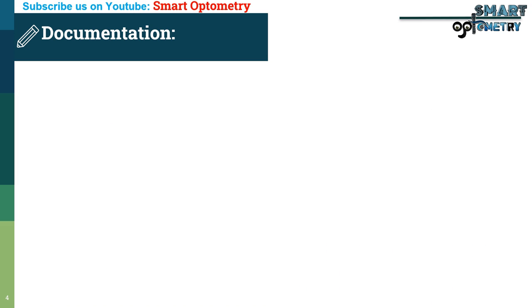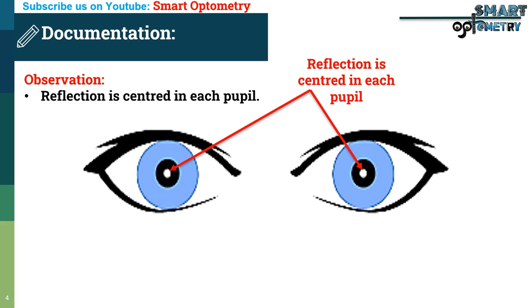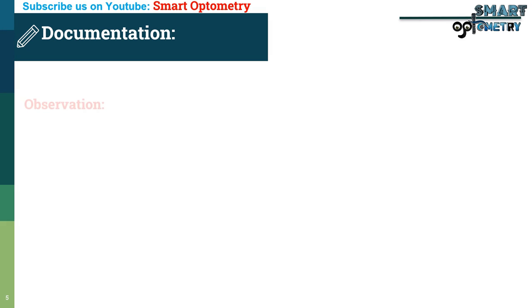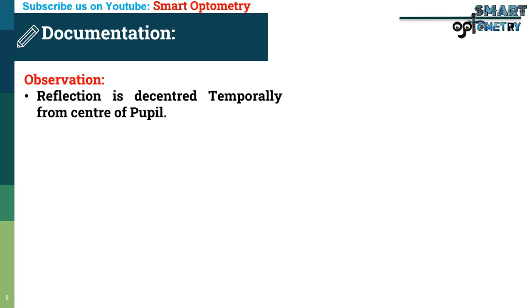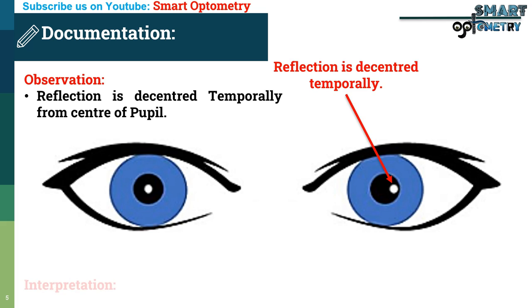Documentation: Observation — reflection is centered in each pupil. Interpretation — orthoposition or normal alignment. Observation — reflection is decentered temporally from the center of pupil. Interpretation — esotropia.